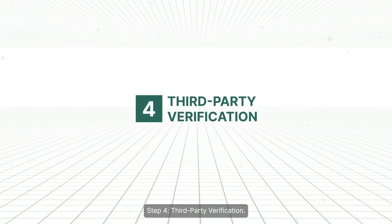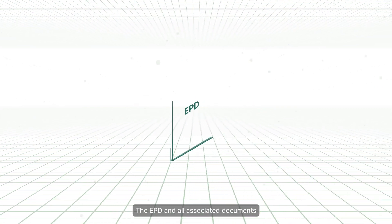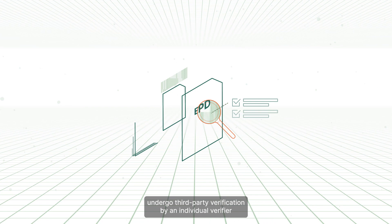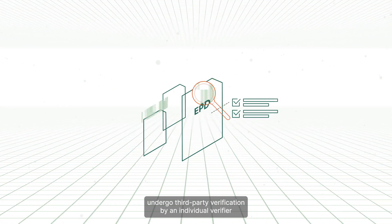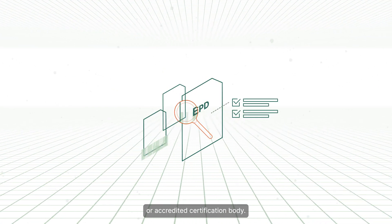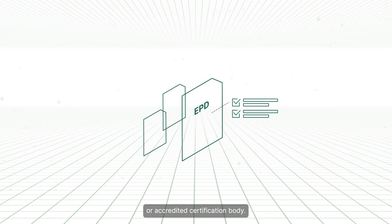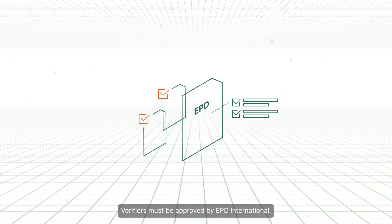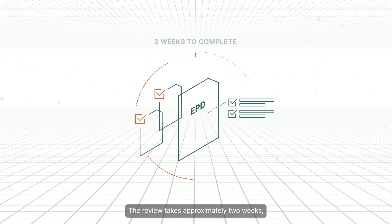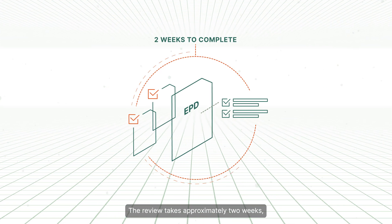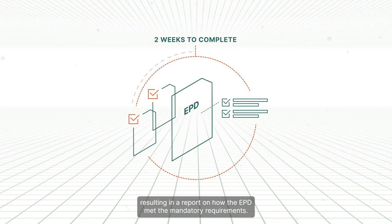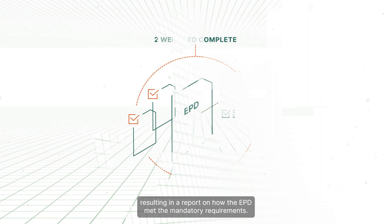Step 4: Third-party verification. The EPD and all associated documents undergo third-party verification by an individual verifier or accredited certification body. Verifiers must be approved by EPD International. The review takes approximately two weeks, resulting in a report on how the EPD met the mandatory requirements.